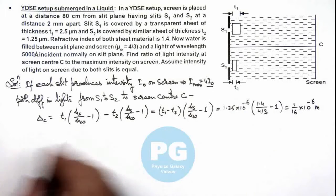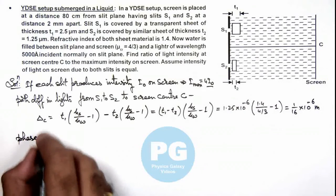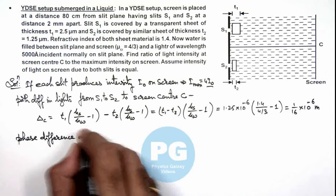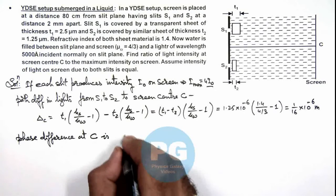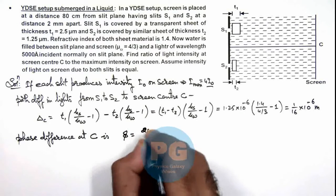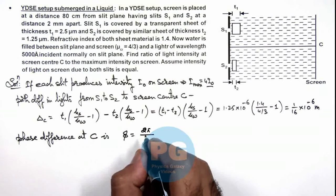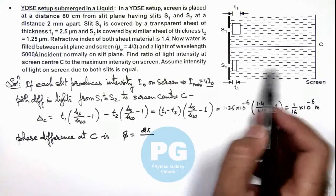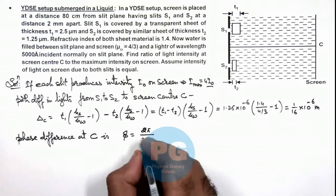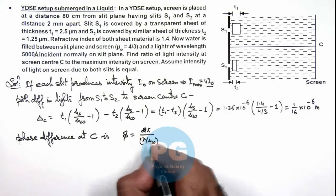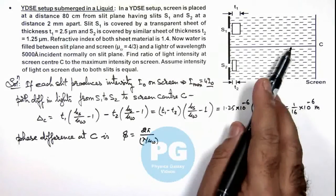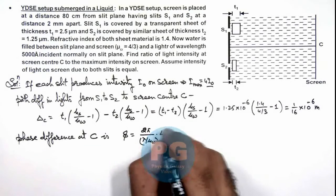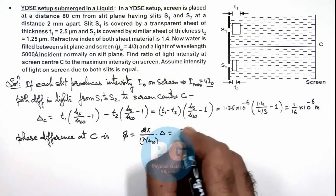Now using this path difference we can calculate the phase difference at C. This phase difference we can write as 2π by the wavelength of light inside the water or the liquid medium, which we can write as λ/μ_water, because the light is eventually traveling in water and interfering here. So this multiplied by Δ, if we substitute the values, this is 2π by...